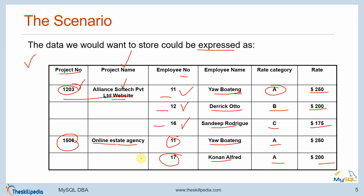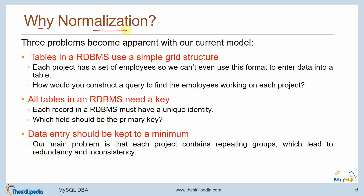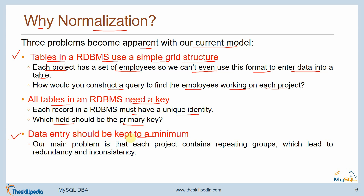We will discuss those anomalies as they become evident. Three problems are apparent with our current model. First, rule number one is completely violated: tables in an RDBMS use a simple grid structure, but each project has a set of employees, so we can't use this format to enter data in a table. Second, rule number two says each record in an RDBMS must have a unique key — there is no way to identify a primary key here. Third, data entry should be kept to a minimum, but each project contains repeating groups which leads to redundancy and inconsistency.